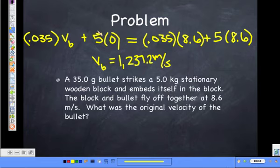This time, you don't have to subtract this over because it's going to be zero. You just have to find the right side and then divide by the 0.035. Good.